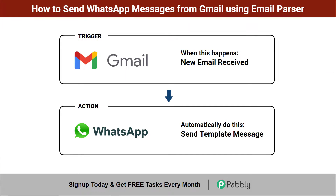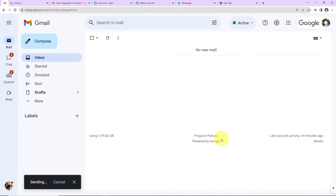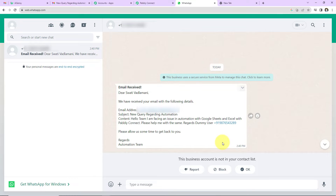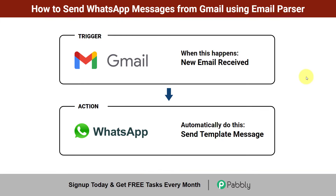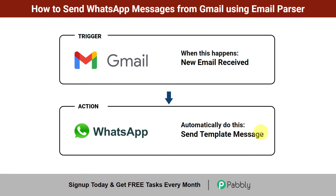Hello and welcome to Pabbly. In this video, we are going to understand how to send WhatsApp messages from Gmail using Email Parser. My objective is that every time a new email is received through Gmail, then automatically a WhatsApp notification must be sent to the user who has just sent the email.